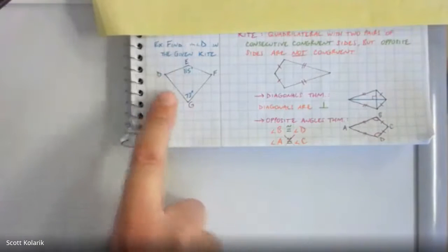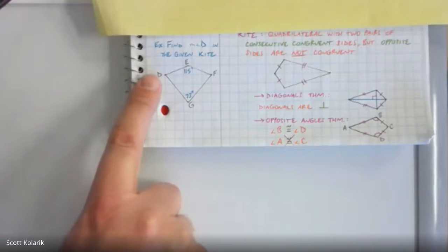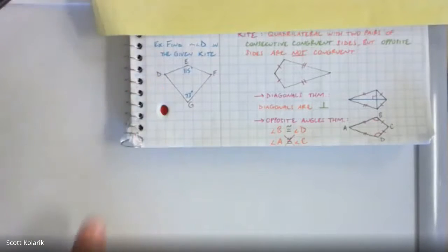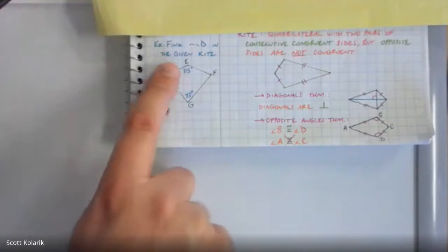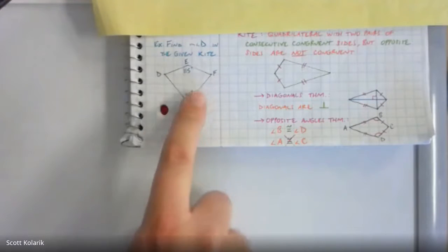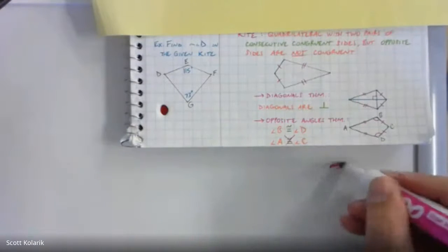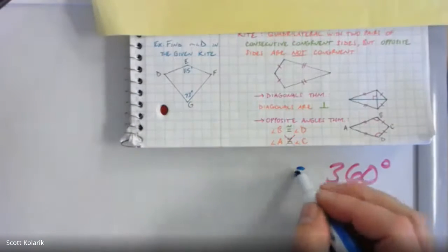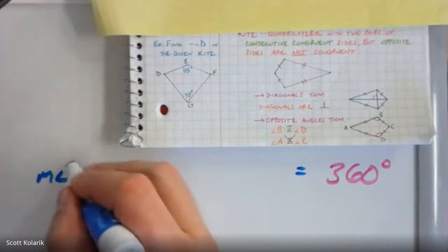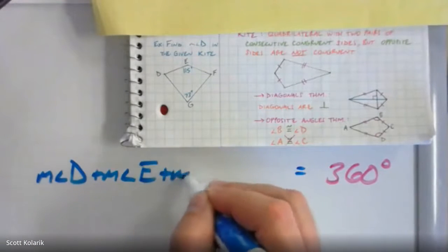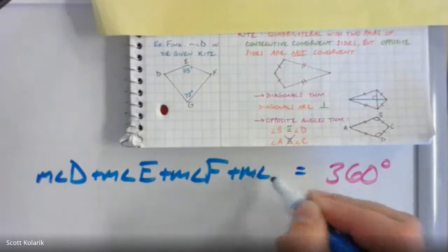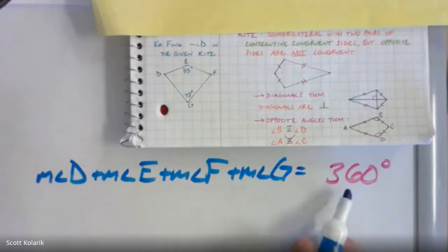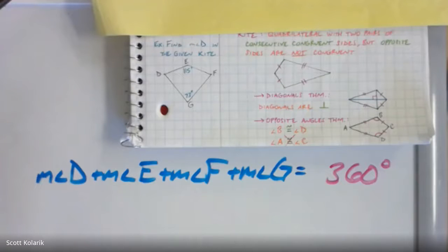Let's work through the example. Our job is to find angle D. First, this is still a quadrilateral — a four-sided figure — so the sum of its interior angles must equal 360 degrees. When I add them up: the measure of angle D plus angle E plus angle F plus angle G must total 360 degrees.